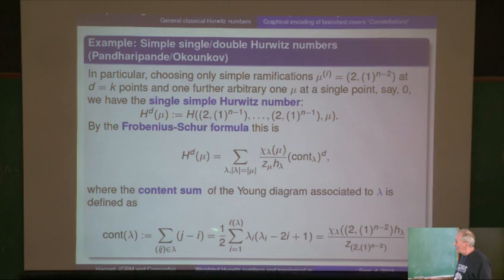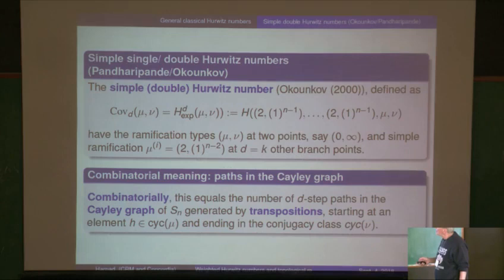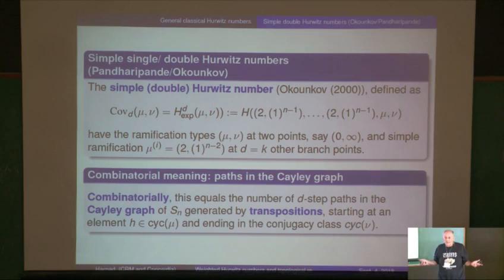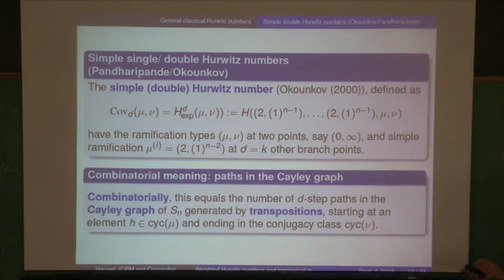This is the notation Okounkov uses: here it's two privileged ones, and we take d of them which are simple. It's not very hard to see — because they're all two-cycles — that this is the same thing as the number of steps in the Cayley graph generated by transpositions of S_n, which takes you from the conjugacy class mu to the conjugacy class nu. That's another combinatorial interpretation.